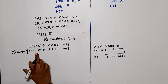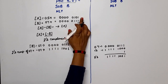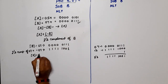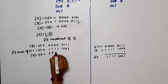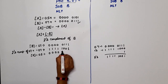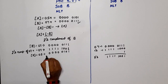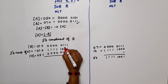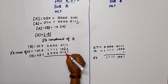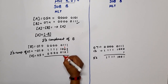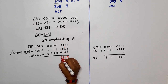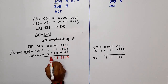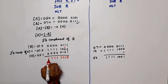Now we have minus 07 (i.e., 11111001). We add this to the content of A, which is 05H = 00000101. Adding: 00000101 plus 11111001 gives us 11111110 with a carry generated out of the MSB.